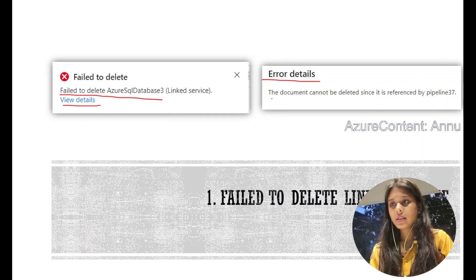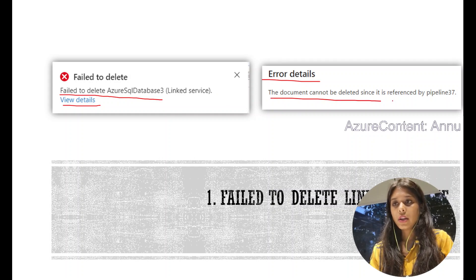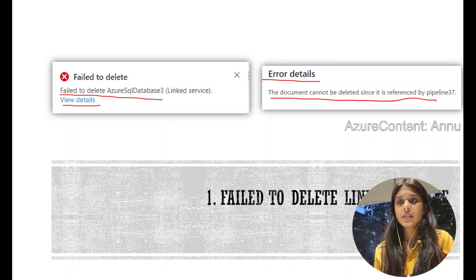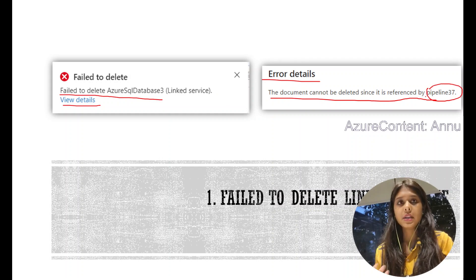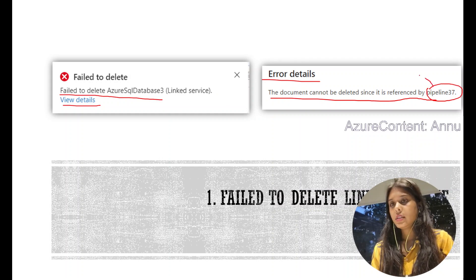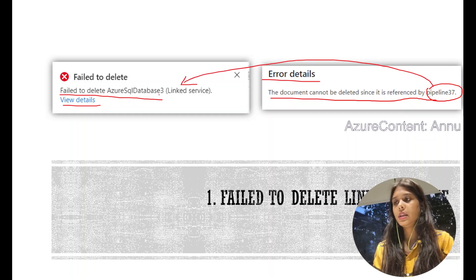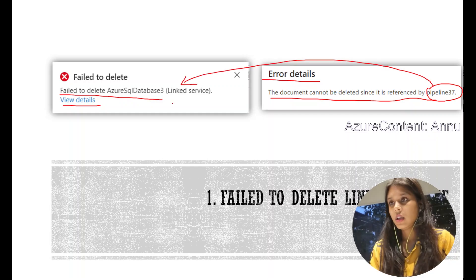The detail says the document cannot be deleted since it is referenced by a pipeline. It may be a pipeline, a dataset, or any resource that is referencing this particular linked service which we are trying to delete. So how do we mitigate this error? Let's see in this video.